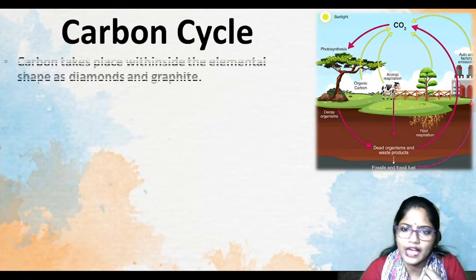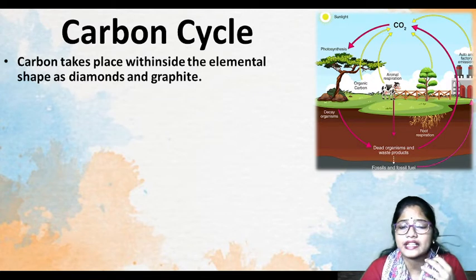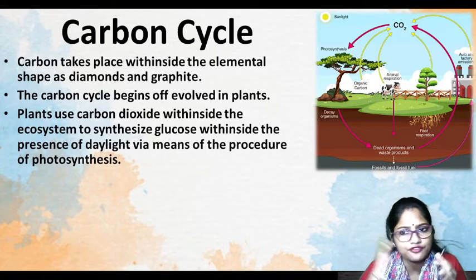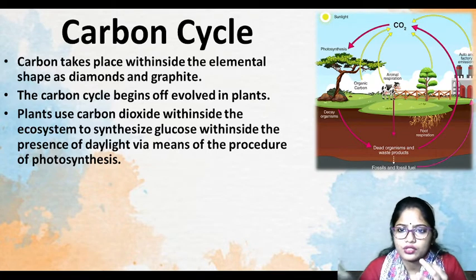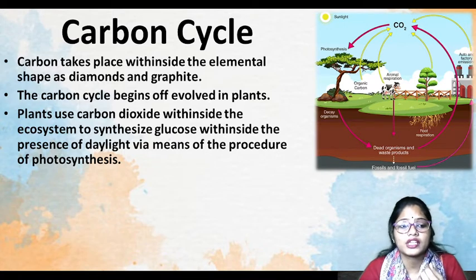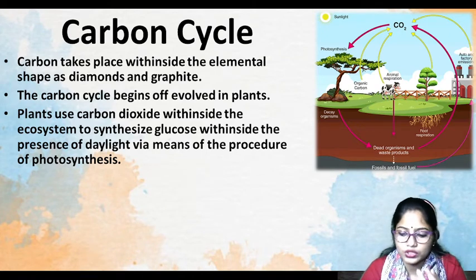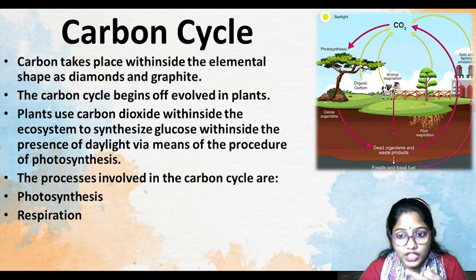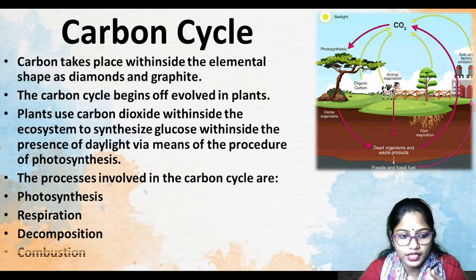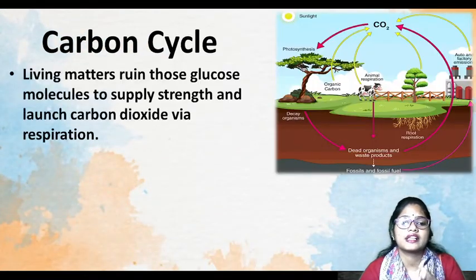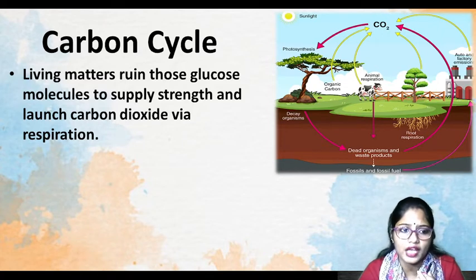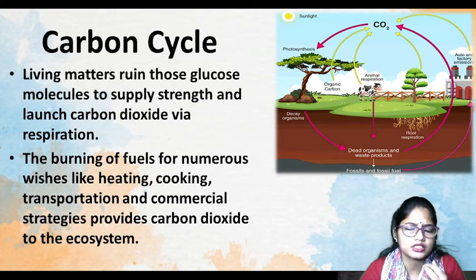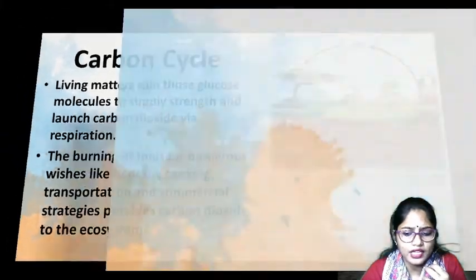Next, let's go to the Carbon Cycle. Our body is made of carbon, and all substances like diamonds and graphite also contain carbon. The carbon cycle begins with plants, because plants perform photosynthesis using carbon dioxide and give out oxygen, producing glucose which contains carbon. The key processes are: photosynthesis — where carbon dioxide is used; respiration — where we give out carbon dioxide; then decomposition; and combustion — through burning, heating, cooking, transportation, and chemicals — all of which release carbon dioxide.